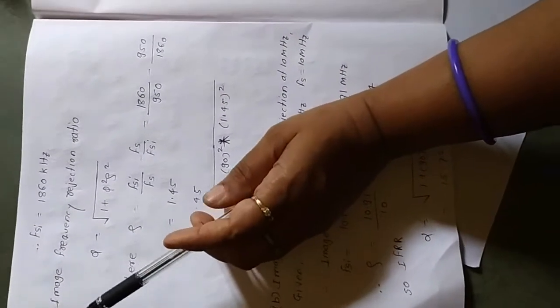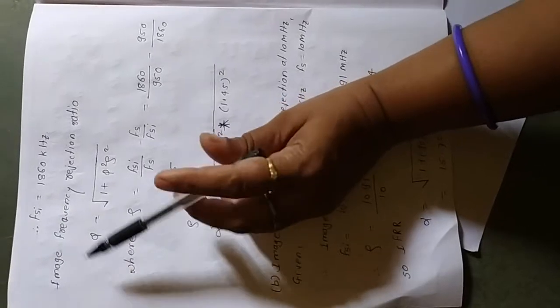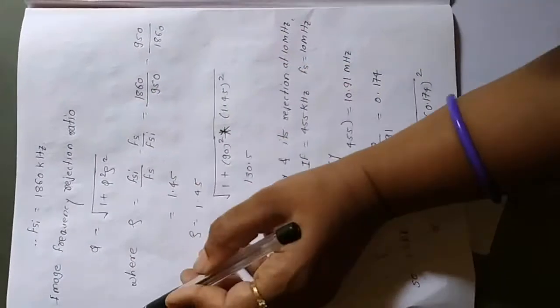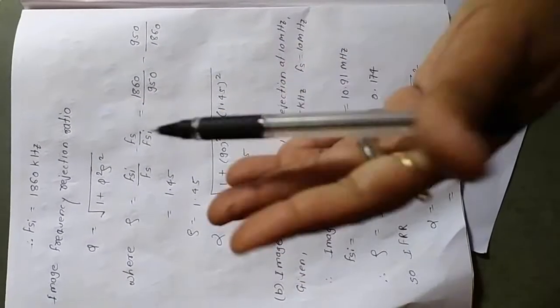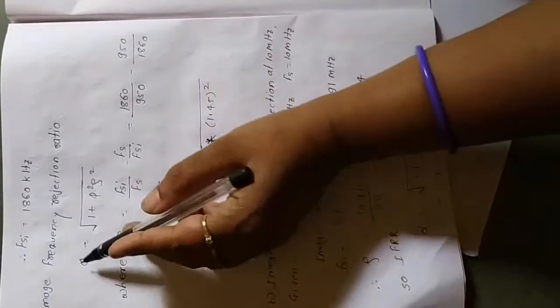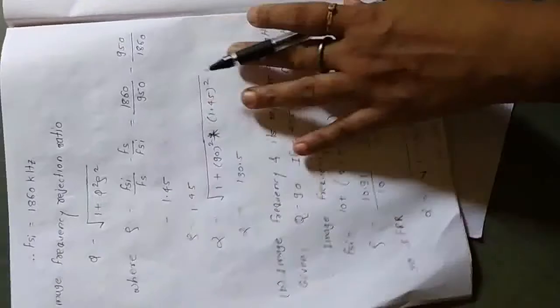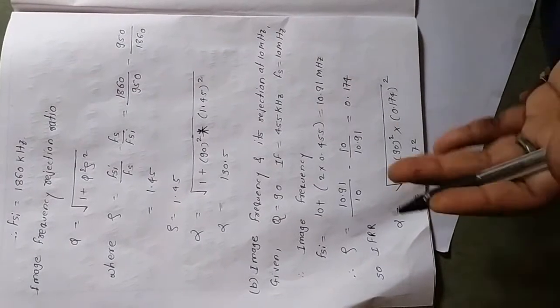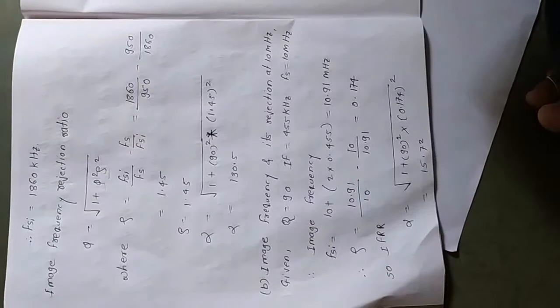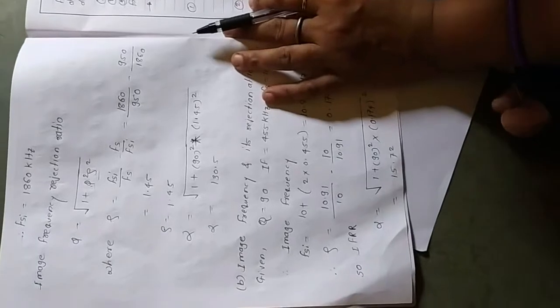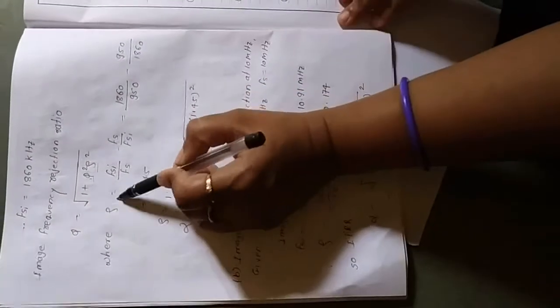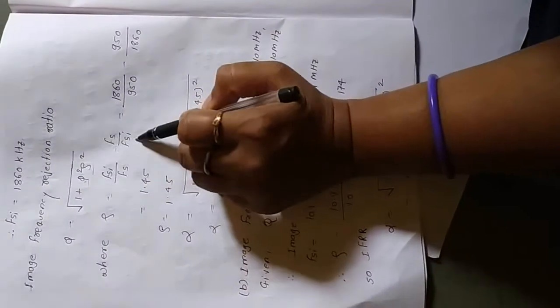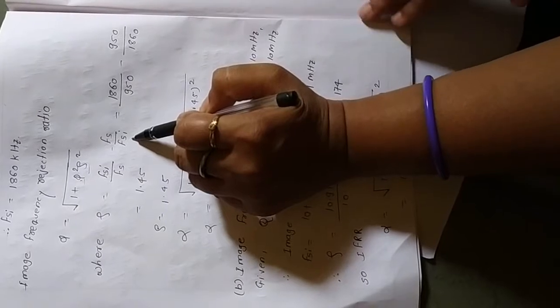The next part asks us to calculate the image frequency rejection ratio. The formula is: alpha = sqrt(1 + Q²ρ²). We know Q = 90, but we need to calculate rho first. The formula for rho is: ρ = (FSI / FS) − (FS / FSI).